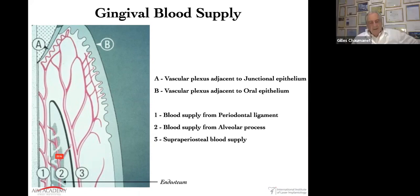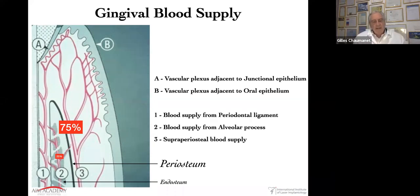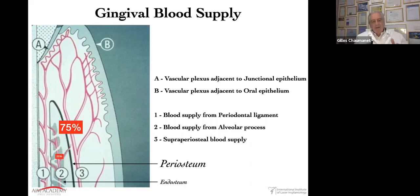Going back to our alveolar bone, we have the endosteum and the periosteum. Since we know that 75% of the blood supply is held by the periosteum through its outer layer, we don't want to deprive the bone of 75% of its blood supply when raising a flap. This may explain a lot of the bone resorption we observe — the healing process goes from hematoma formation through neo-vascularization to bone consolidation and remodeling, extensively published in orthopedic journals.